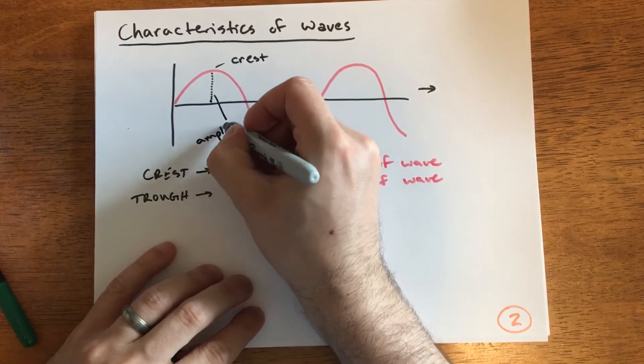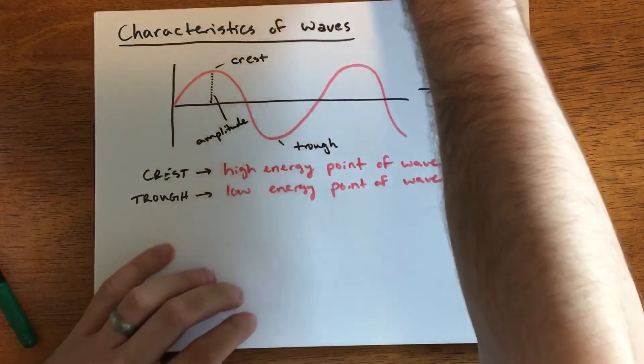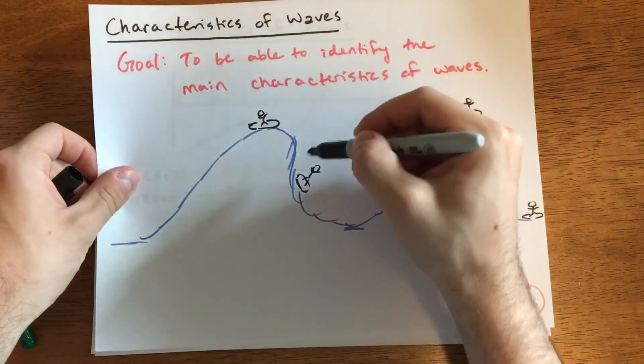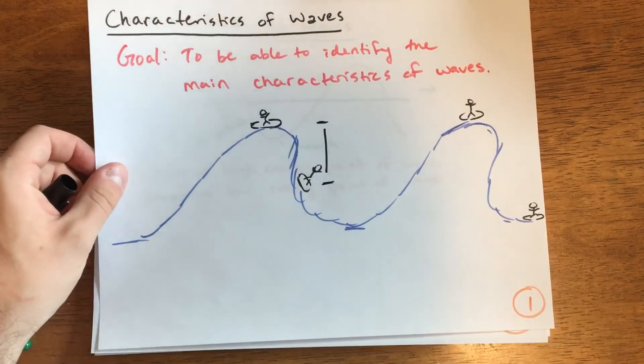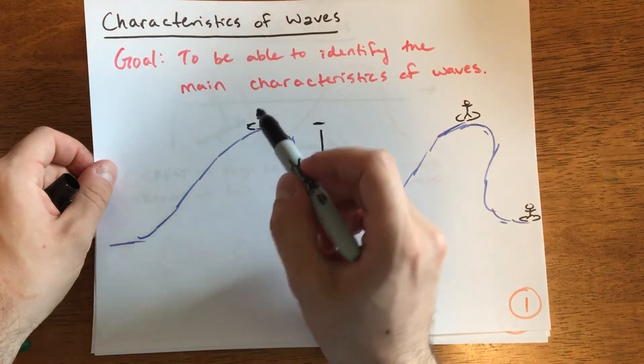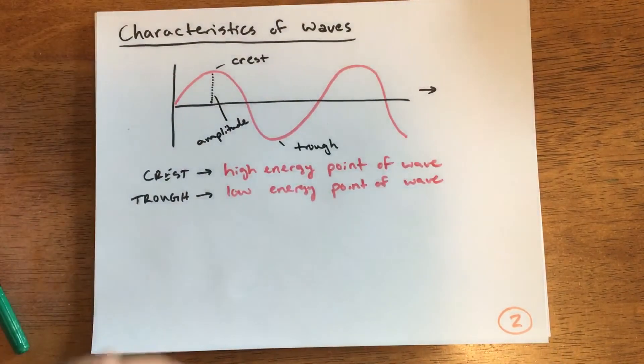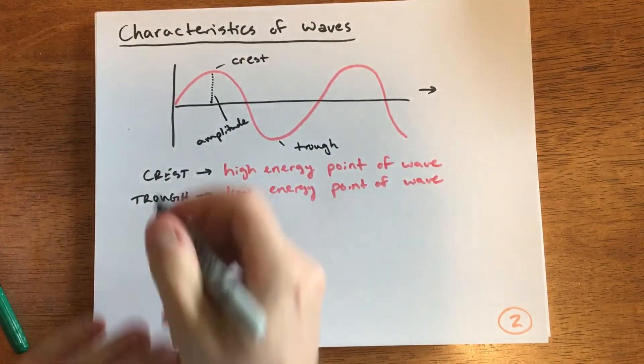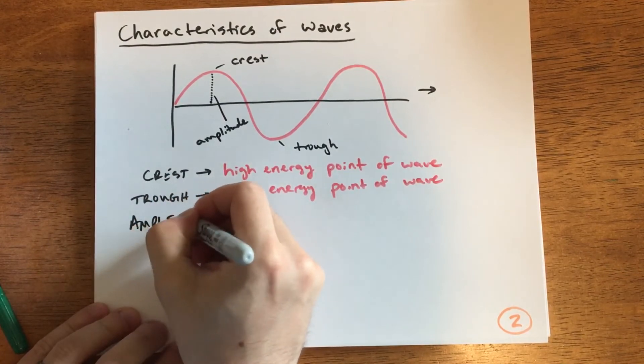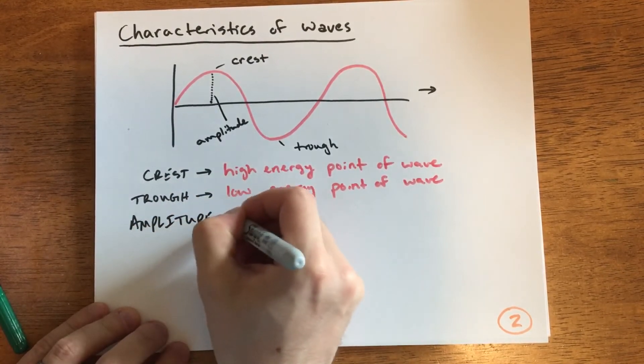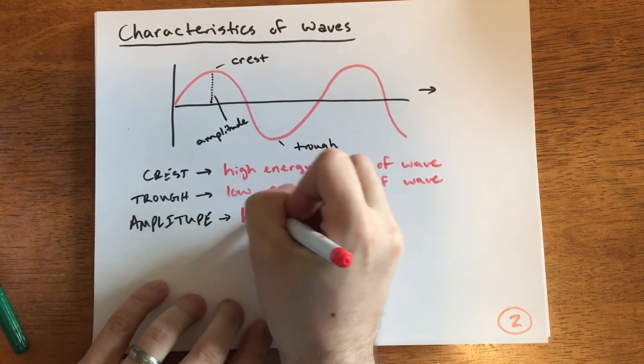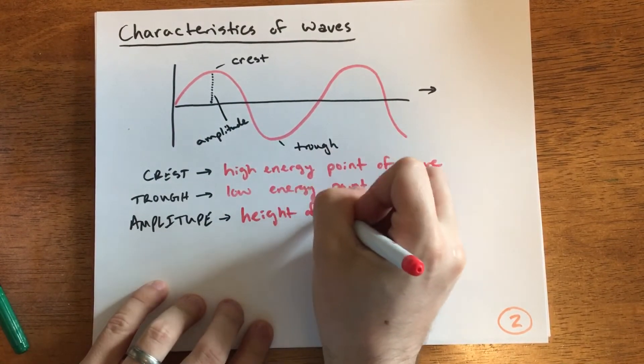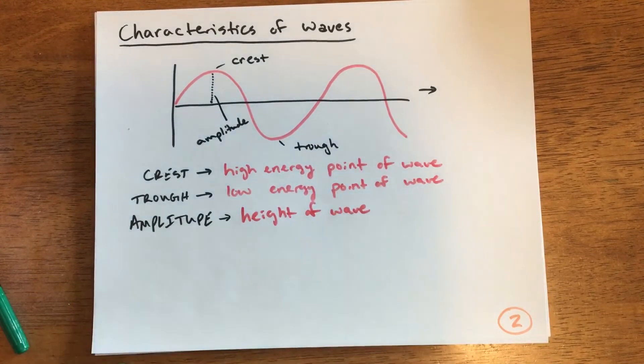The amplitude is how tall the wave is from the middle. In the last image, the amplitude would be from the middle surfer to the top surfer, or from the middle surfer to the bottom surfer, but not from the top all the way to the bottom. We can call this the height of the wave.